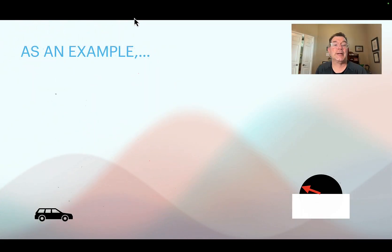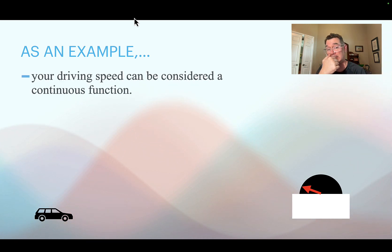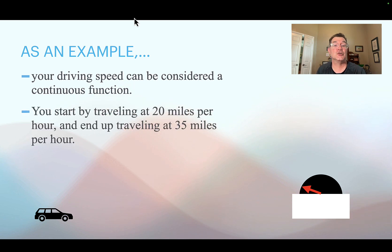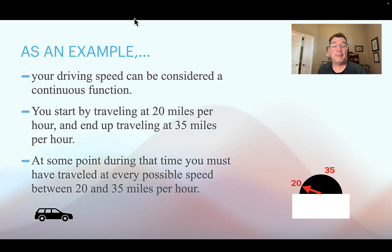So a practical application of that, you've all driven in a car before or you've ridden in a car before. Let's say that you start traveling at 20 miles per hour and you end at 35 miles per hour. Then you know that as you're going from 20 to 35 miles per hour, you're hitting every speed in between. That makes sense because your speed is a continuous function.